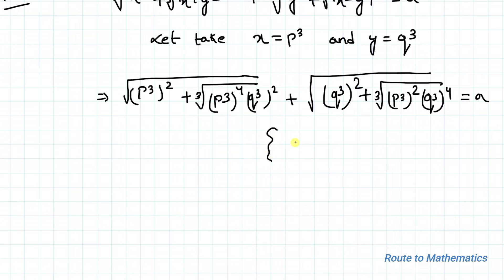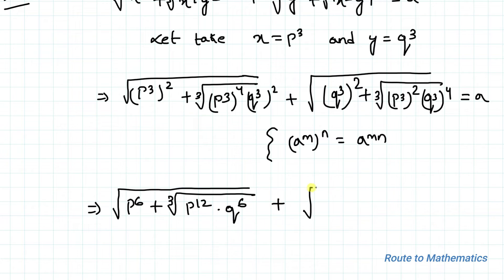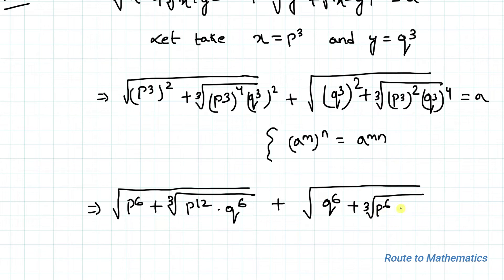We know an exponential law that (a^m)^n = a^(mn). By applying this law we can write the equation as √(p⁶ + ∛(p¹² · q⁶)) + √(q⁶ + ∛(p⁶ · q¹²)) = a.